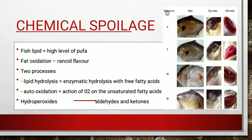Now for chemical spoilage: this is mainly caused by fish lipids. These lipids undergo fat oxidation upon decomposition, producing a rancid flavor that indicates the fish is spoiled. Chemical spoilage involves two processes: lipid hydrolysis — either enzymatic hydrolysis producing free fatty acids, or auto-oxidation, meaning the action of oxygen on unsaturated fatty acids — resulting in conversion of hydroperoxides into aldehydes and ketones.